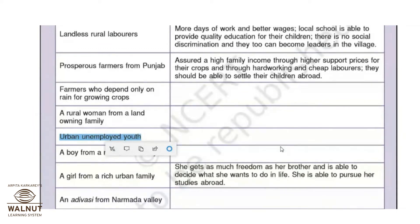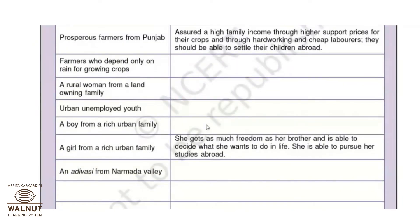What will be the goal for a boy from a rich urban family? He is staying in the city and comes from a well-to-do family. It could be getting admission to a good college or university of his choice, since his parents can afford it. Or if he wants to join the family business instead of focusing on education, developing that business is his idea of development.